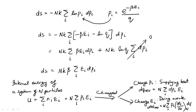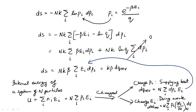Using this microscopic picture of heat supplied in the expression for change in entropy, dS becomes k beta times dq_reversible. Finally, since beta equals 1 over kT, we obtain dS equals dq_reversible divided by T. We have thus obtained the classical formula for the change in entropy using the statistical definition of entropy.